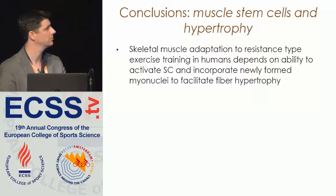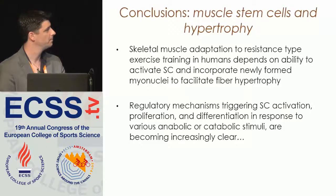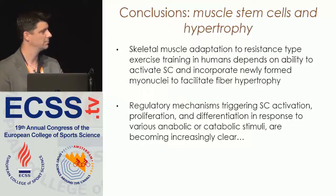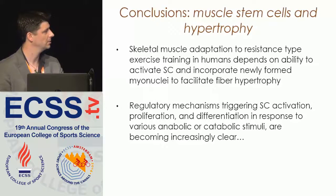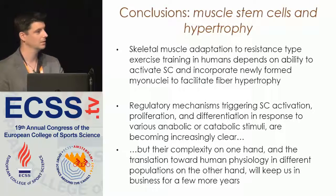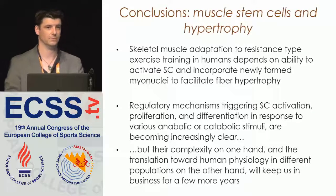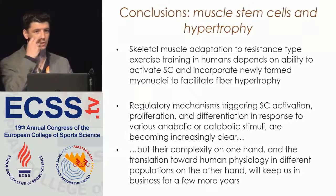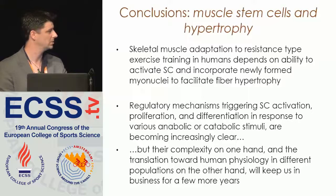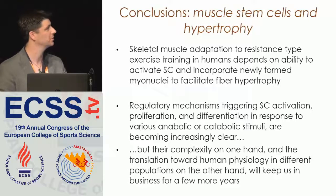Overall, we definitely think that skeletal muscle adaptations to resistance-type exercise training in humans depend on the ability to activate satellite cells, incorporate new myonuclei, and in that way facilitate muscle fiber hypertrophy, especially in type 2 muscle fibers. Regulatory mechanisms triggering activation, proliferation, differentiation, and fusion of new myonuclei in response to anabolic or catabolic stimuli are becoming increasingly clear but are also pretty complex. Translating data from in vitro or animal work to human physiology is difficult, especially for elderly or specific compromised populations.